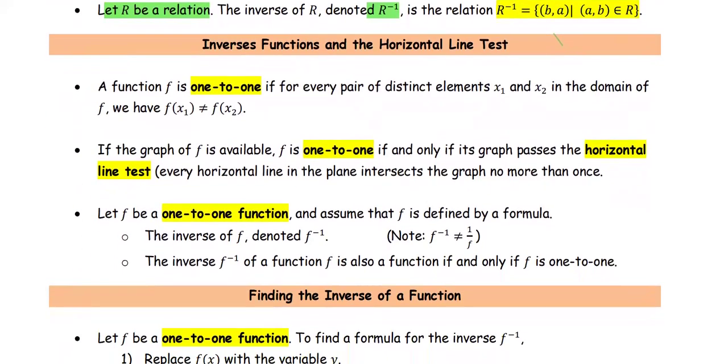Inverses of Functions and the horizontal line test. A function f is 1 to 1 if for every pair of distinct elements x1, x2 in the domain of f, we have f(x1) not equal to f(x2). So that means if you have different x values, those different x values will not have the same y values. If the graph of f is available, f is 1 to 1 if and only if its graph passes the horizontal line test. That means every horizontal line in the plane intersects the graph no more than once.